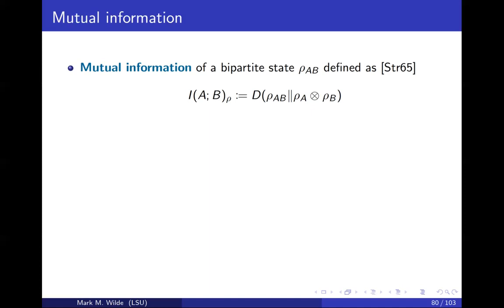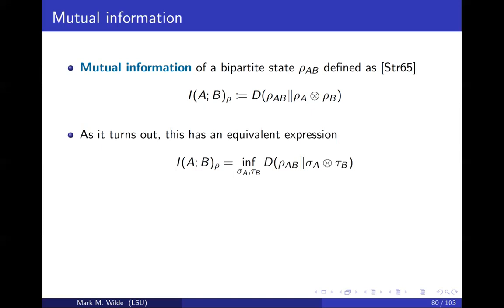If rho_AB is very far from a product state, the maximum that the mutual information can be is twice the minimum of the log of the local dimensions of A and B. That's the largest it can be, and that's saturated by a maximally entangled state. There's an equivalent expression for mutual information where you can optimize the relative entropy over all possible product states — not just the tensor product of the local marginal states — and that is also equal to the mutual information, from a peculiar property of relative entropy.